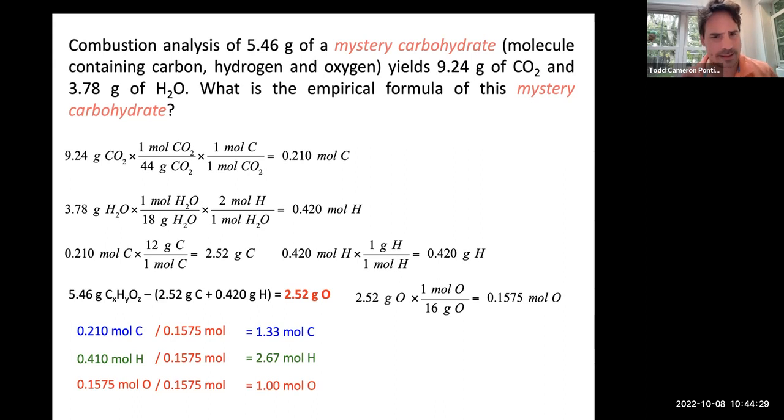But would our formula be C1.33, H2.67? Oh, no. To get these to be whole numbers, we have to multiply them all by three. And then we would get C4H8O3. And that is a viable empirical formula.